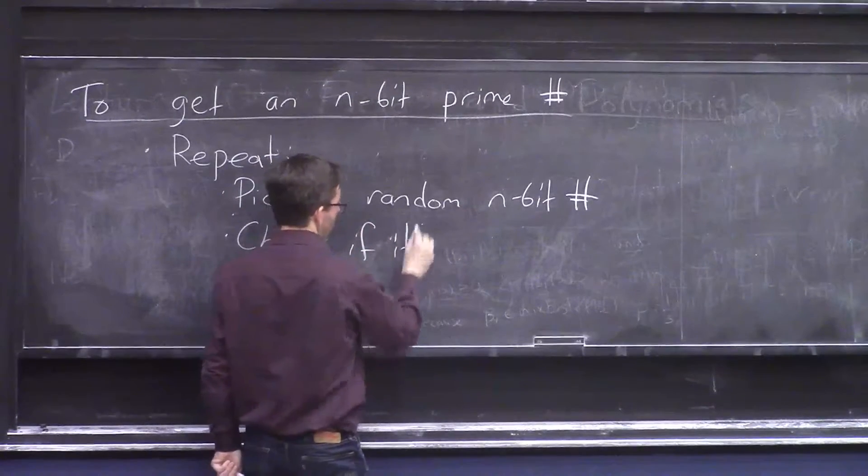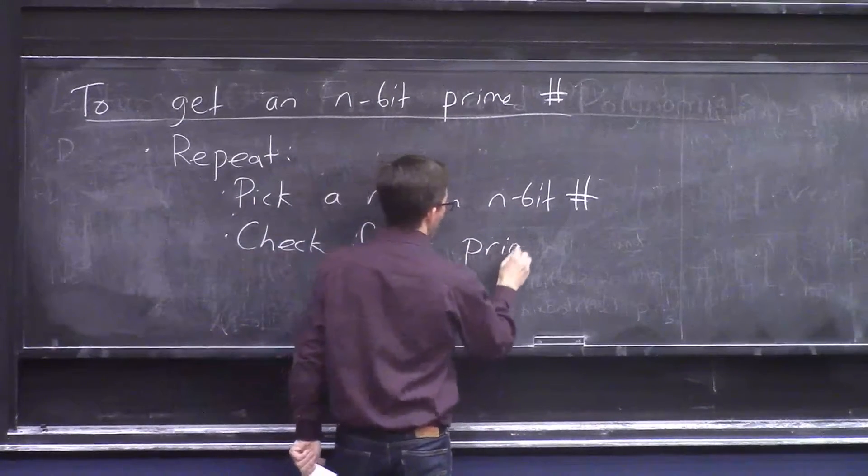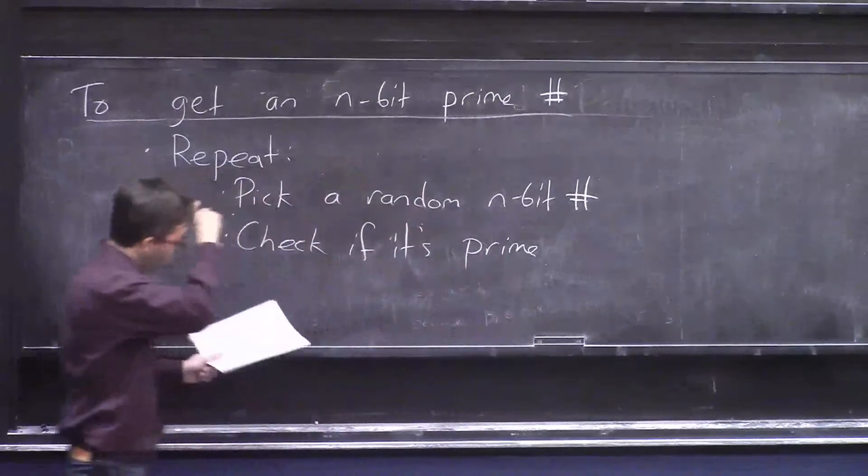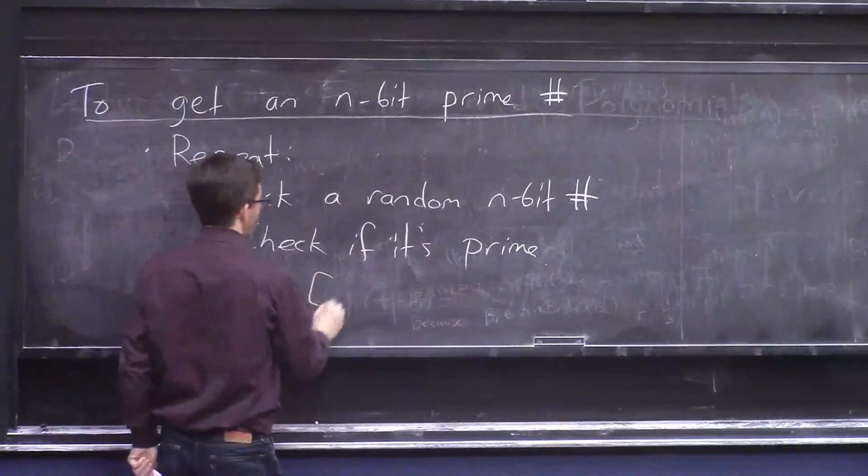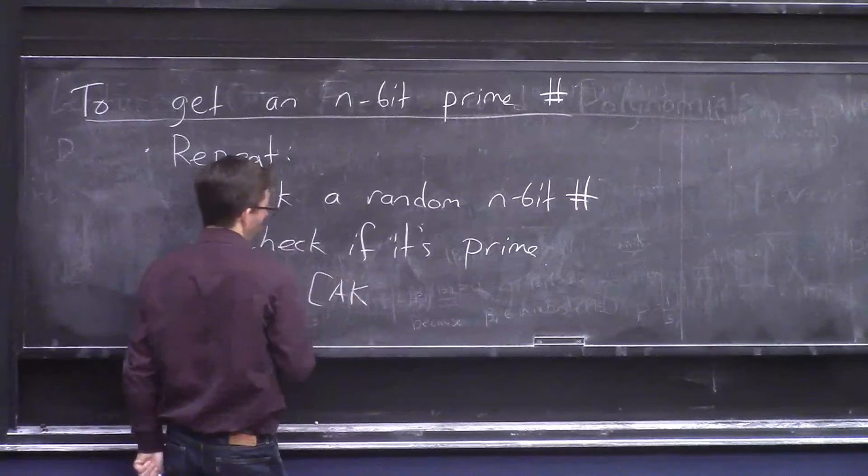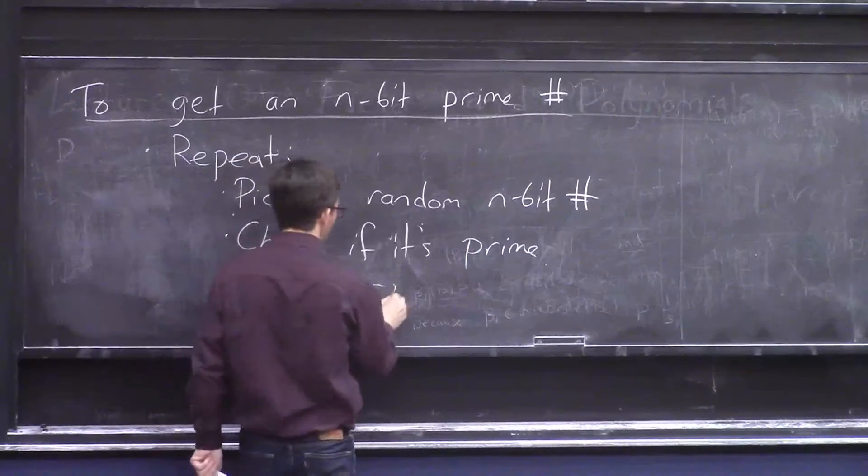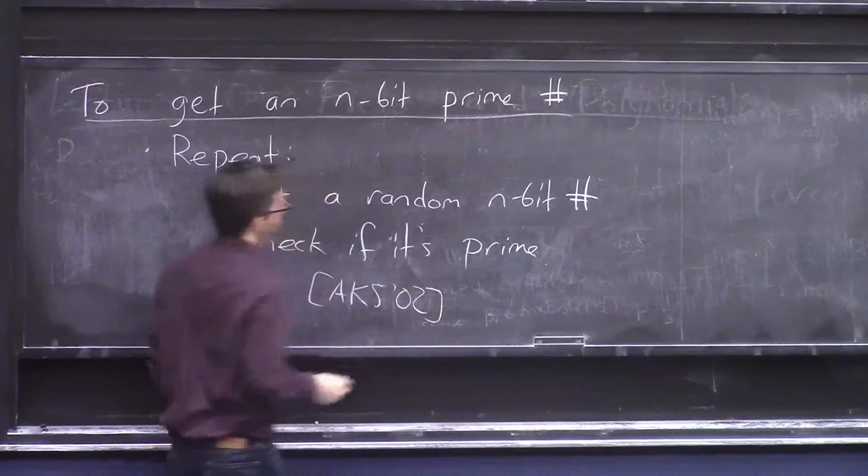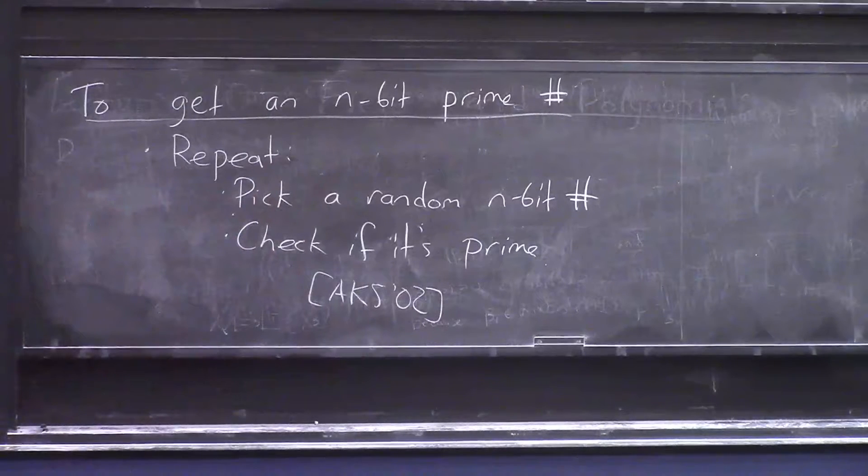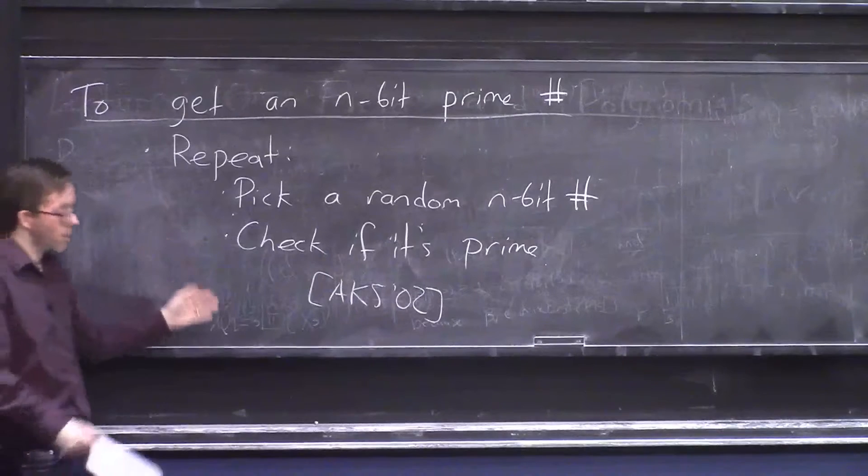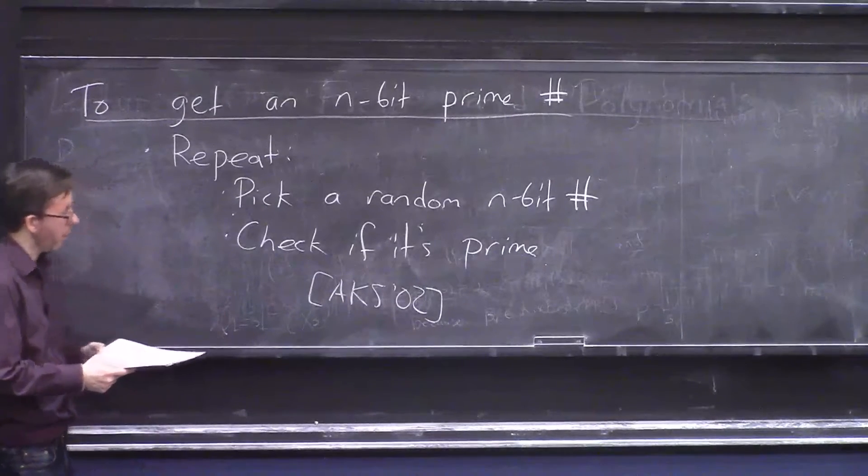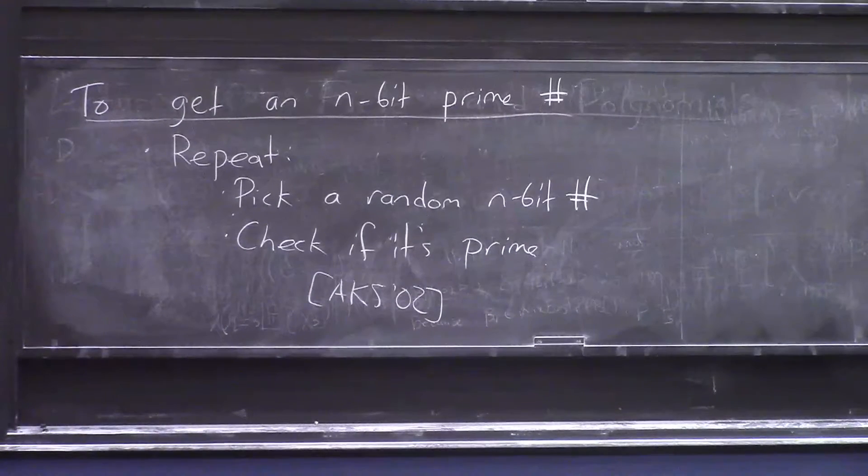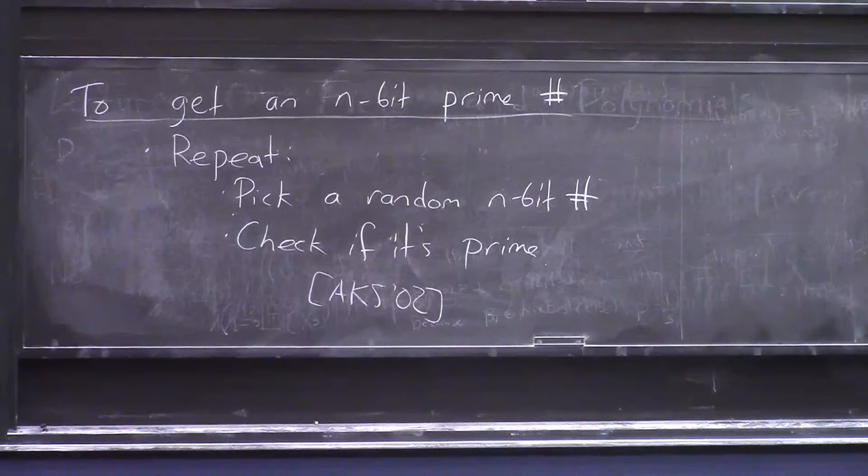And as we've mentioned a few times, this last step, you can do with either this deterministic algorithm of Agrawal, Kayal, and Saxena from 2002, which runs in O tilde n to the sixth time. Or, since you're already using randomness, you can use the Miller-Rabin algorithm, which is basically quadratic time, but it's a randomized algorithm for primality testing.